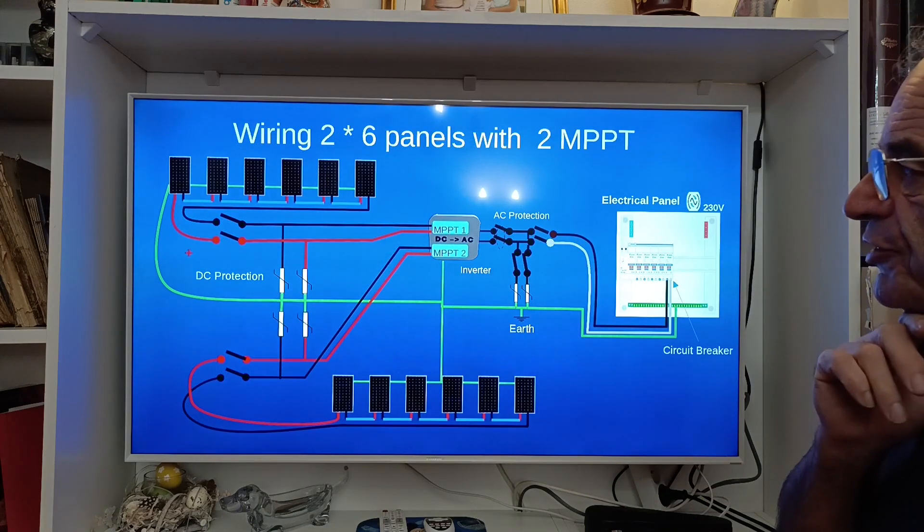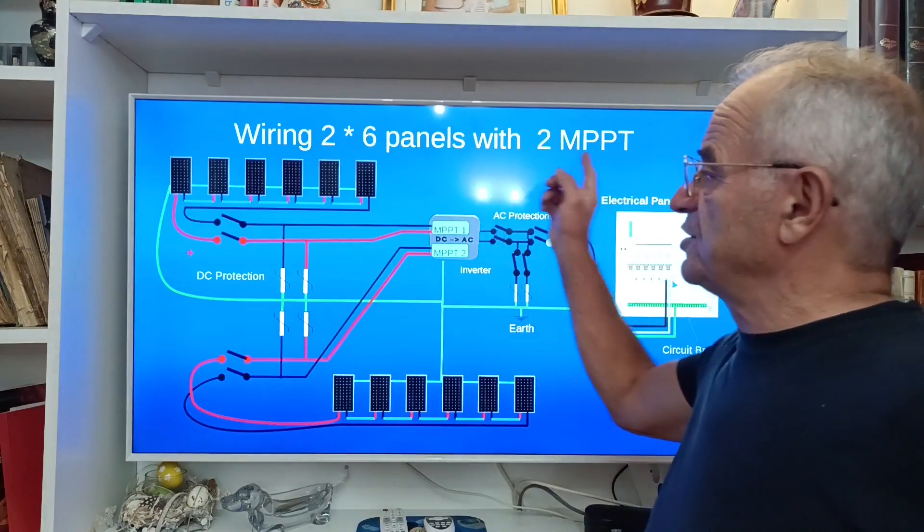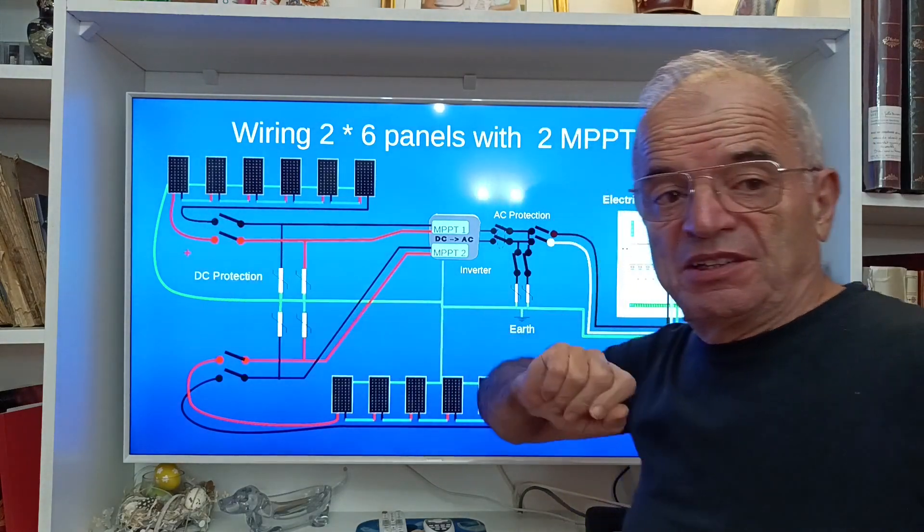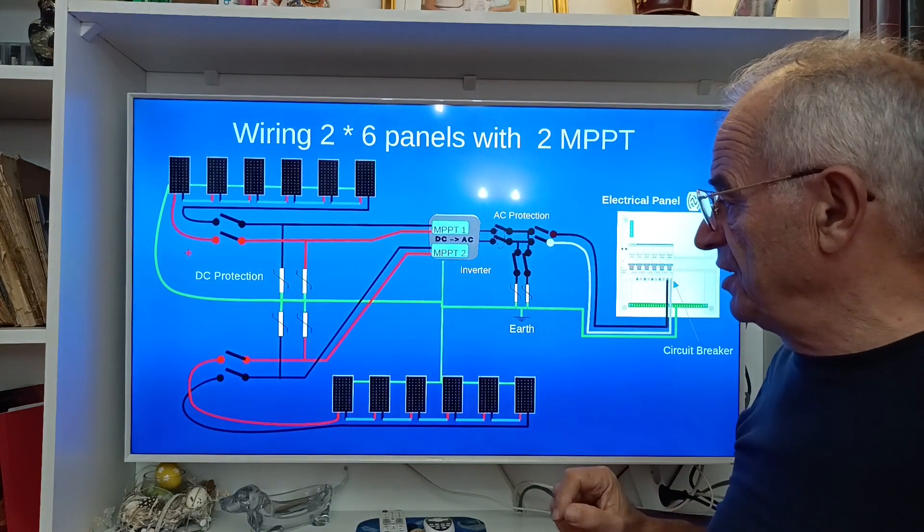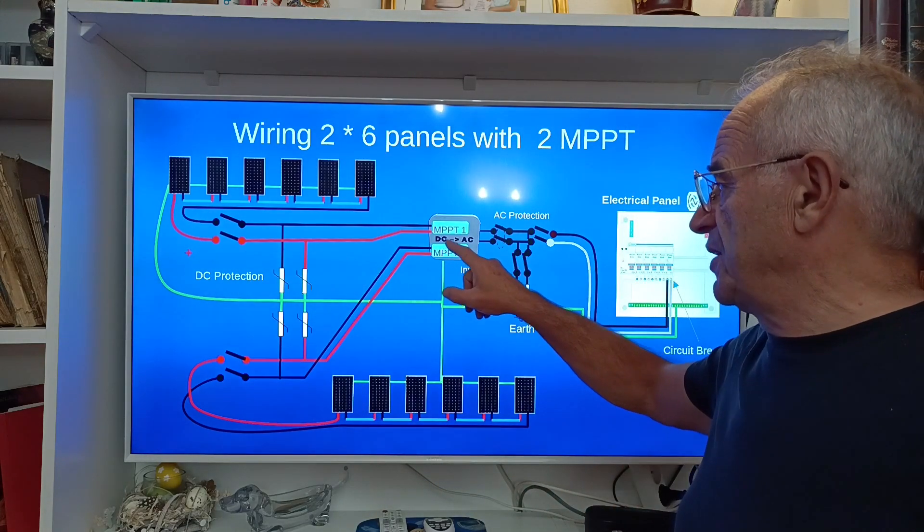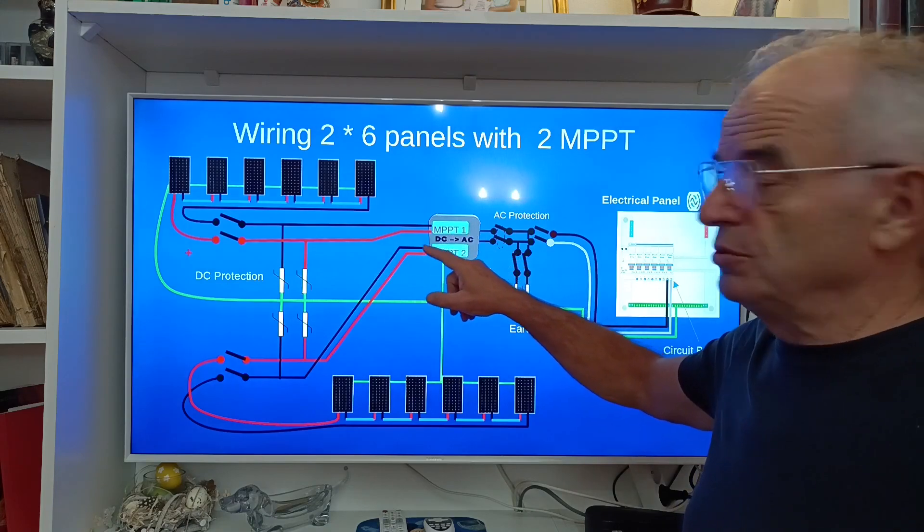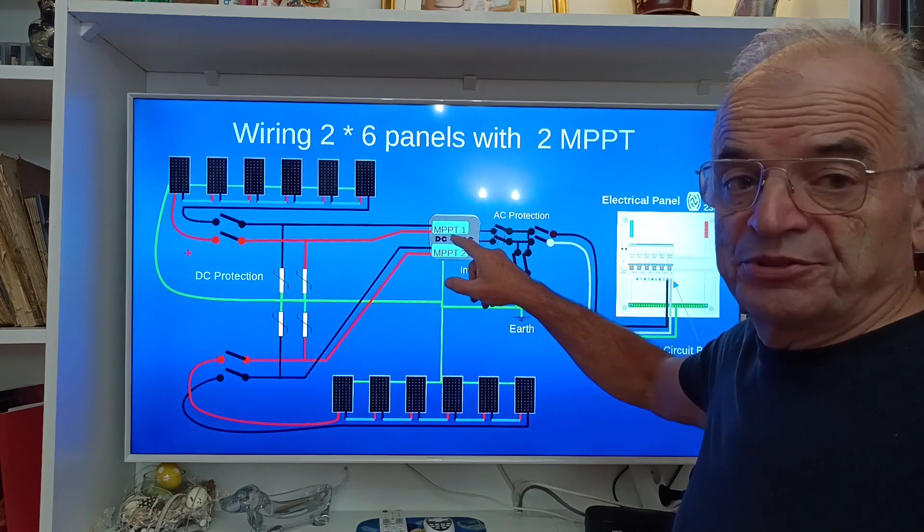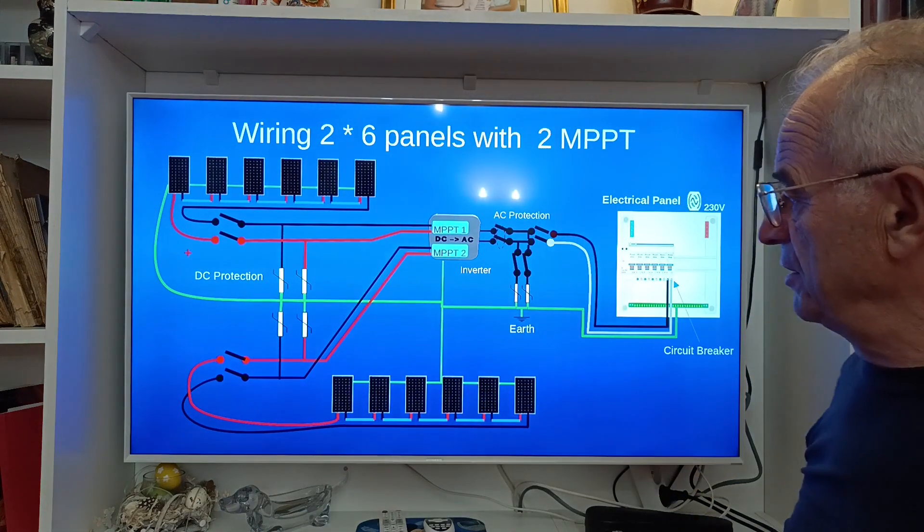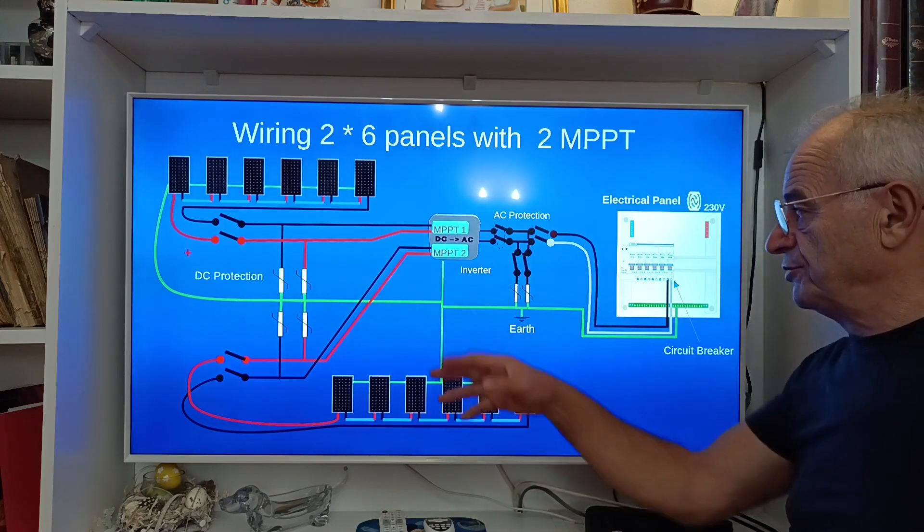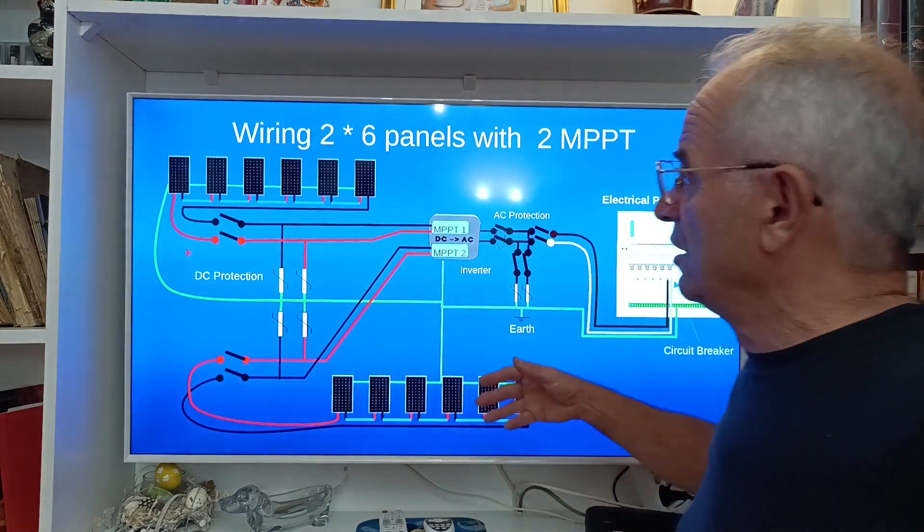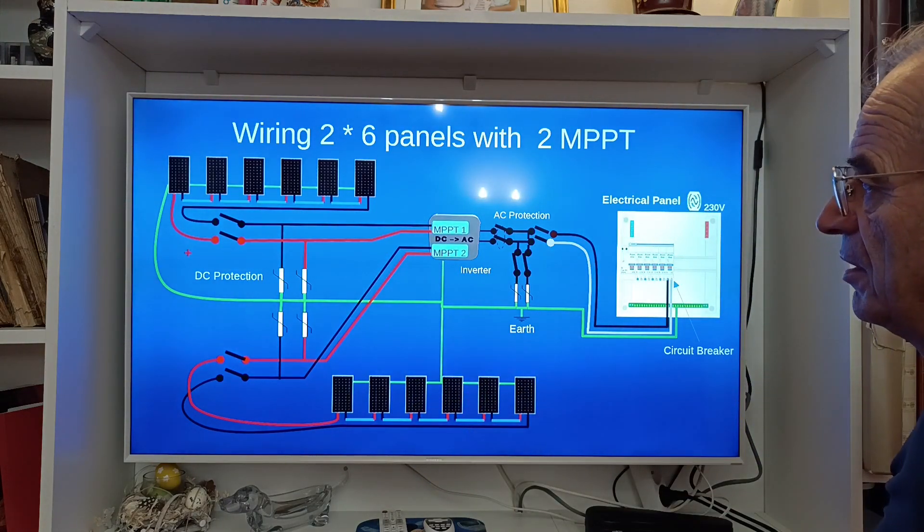Another interesting configuration is if you want to wire two times six panels. Two times six panels here, you can have all the six panels in serial as we have already seen, and here another group of six panels. And you have an inverter which has two MPPT trackers, two maximum power point trackers. So you can connect one to the group of six here, and another one to the group of six here. And for the rest, there is no difference. So it's a way to interconnect two different groups of panels.